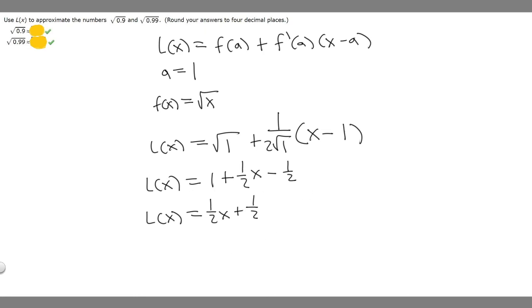Now we can solve both of these numbers since they're the same thing. All we got to do is just plug in for x what the numbers are inside. Let's do 0.9 first. L(0.9) = ½(0.9) + ½. If you get out your calculator, ½ times 0.9 is 0.45, and plus ½ is 0.95.